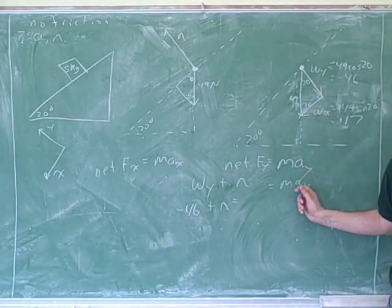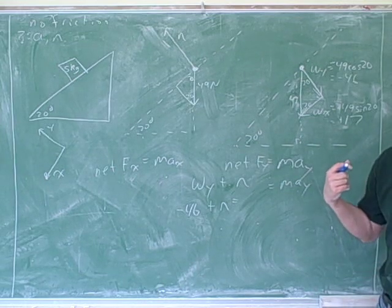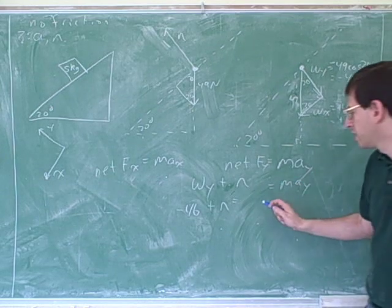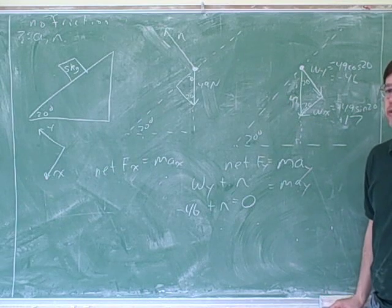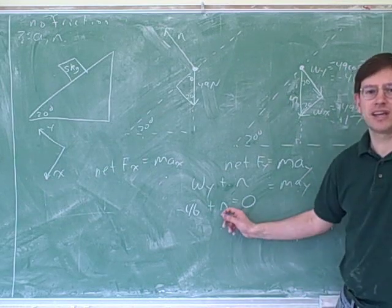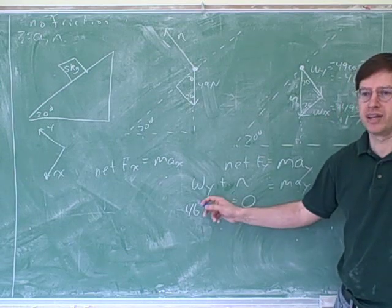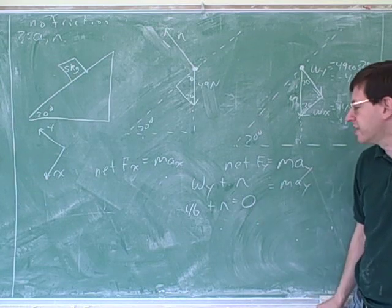And all we care about here is the y acceleration. If an object is motionless in one component, then its acceleration for that component must be zero. That's the reason we put zero here. If the object was moving in the y component, these don't have to cancel. The normal force doesn't always equal the weight or y component of weight. It's just because this object isn't moving that these cancel out.